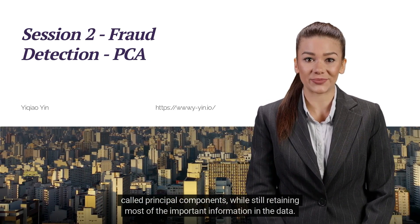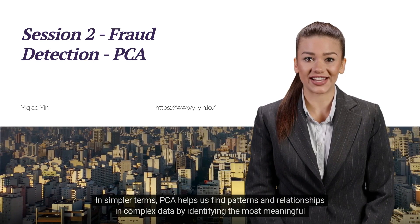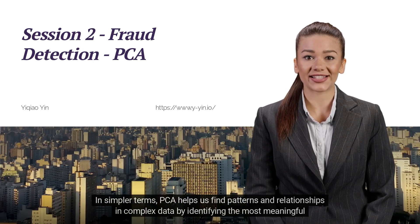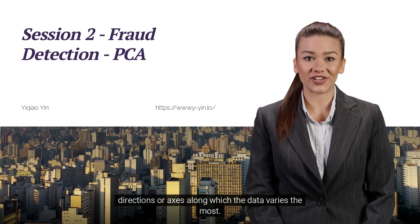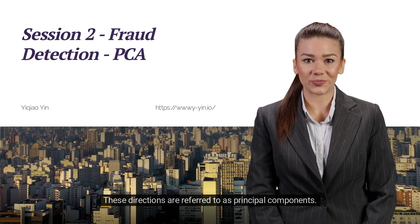While still retaining most of the important information in the data, in simpler terms, PCA helps us find patterns and relationships in complex data by identifying the most meaningful directions or axes along which the data varies the most. These directions are referred to as principal components.